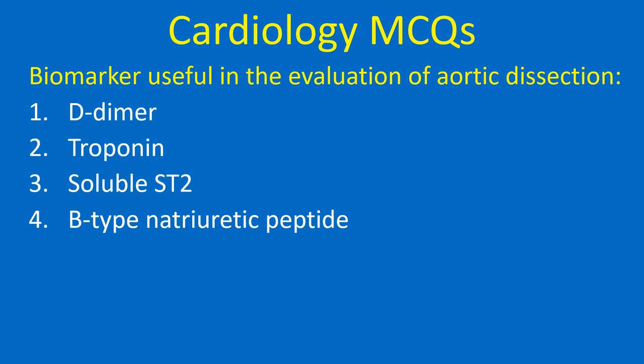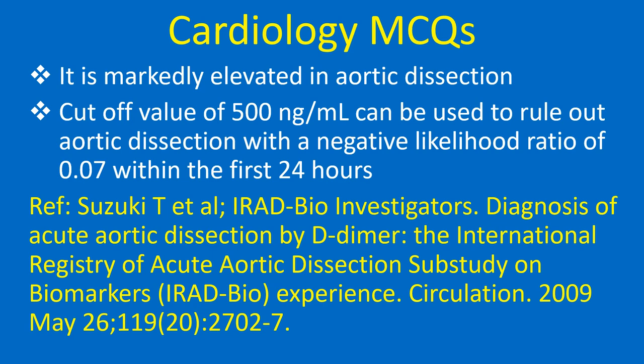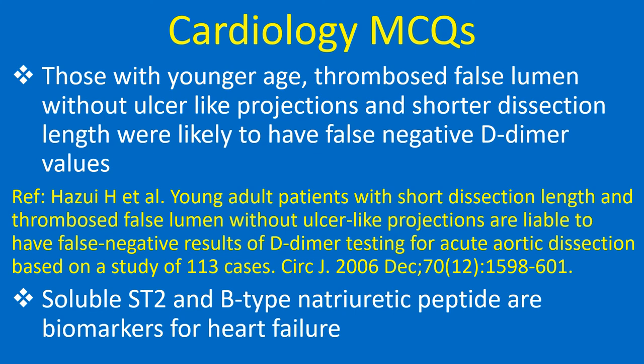Biomarker used in aortic dissection: 1. D-Dimer, 2. Troponin, 3. Soluble ST2, 4. B-type natriuretic peptide. Correct answer: 1. D-Dimer. Though several biomarkers have been evaluated in aortic dissection, only D-Dimer is considered clinically feasible. It is markedly elevated in aortic dissection. A cut-off value of 500 ng/mL can be used to rule out aortic dissection with a negative likelihood ratio of 0.07 within the first 24 hours. Those with younger age, thrombosed false lumen without ulcer-like projections, and short dissection length were likely to have false-negative D-Dimer values.